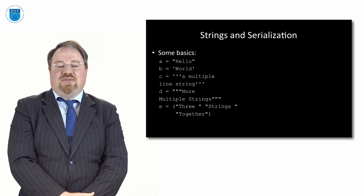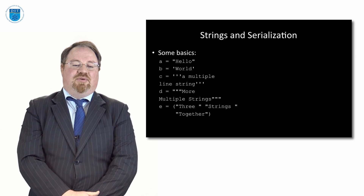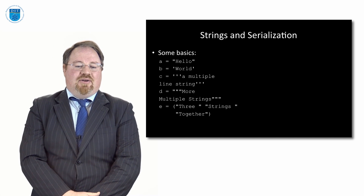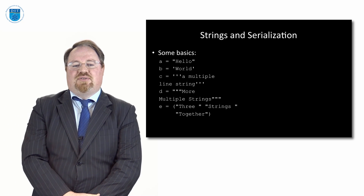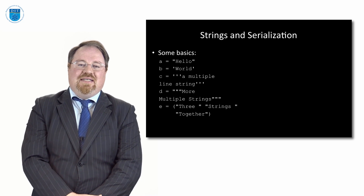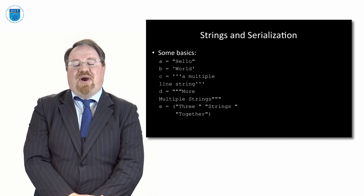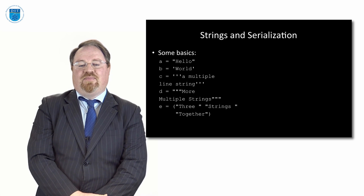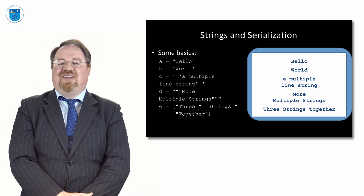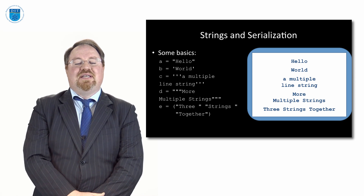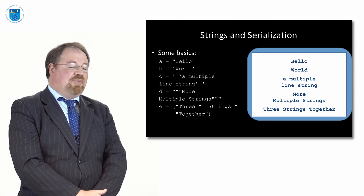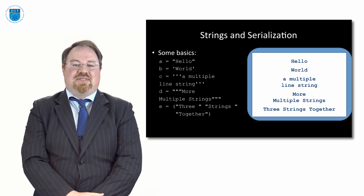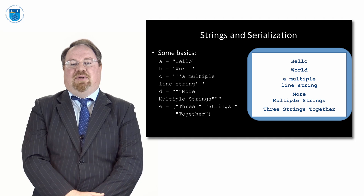If we want to put a string over multiple lines we can use three single quotes or three double quotes — that's c and d. As long as we don't terminate it at the end of the first line, it goes on to the second line no problem. Another way to create a string is through composition — that's e — where we put three separate strings in brackets and that joins them together, the same as using the plus operator.